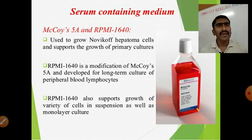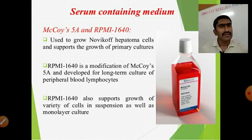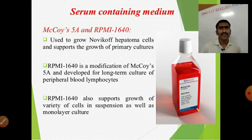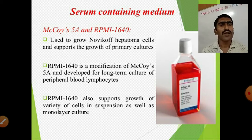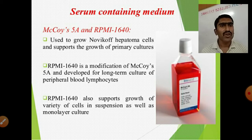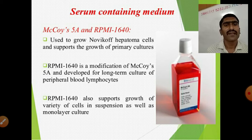Mycoise 5A is used to grow Novikov's hepatoma cells and supports the growth of primary cultures. RPMI 1640 is a modification of Mycoise 5A, developed for long-term culture of peripheral blood lymphocytes. RPMI also supports growth of a variety of cells in suspension as well as monolayer culture.